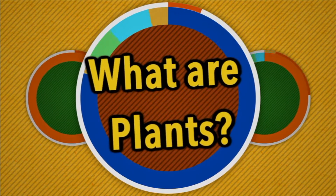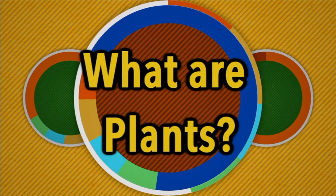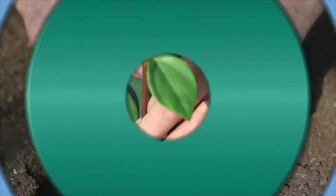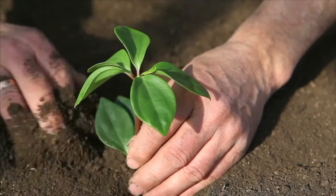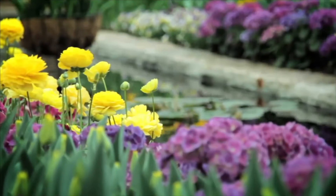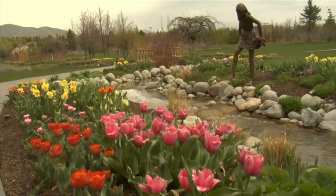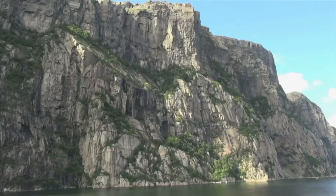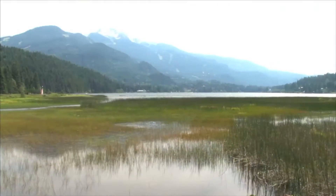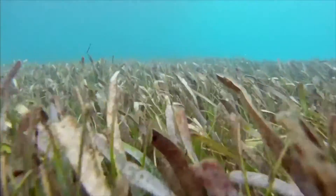What are plants? Plants grow just about everywhere. You find them in gardens, in parks, they grow on mountainsides, and around lakes. Plants grow in water and underwater too. Plants are everywhere, and that's good because people use plants every day for all kinds of things.